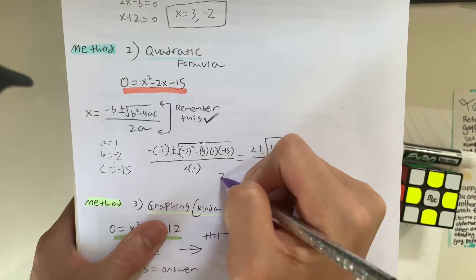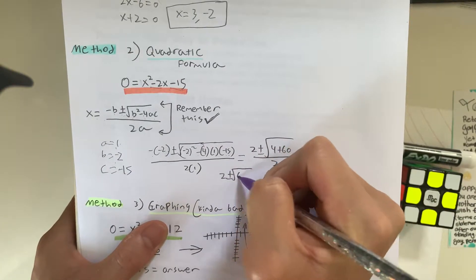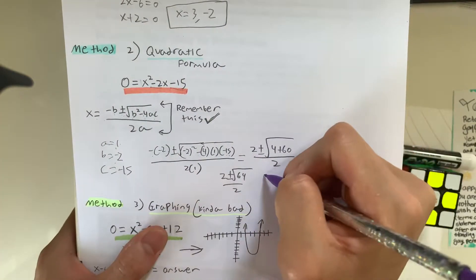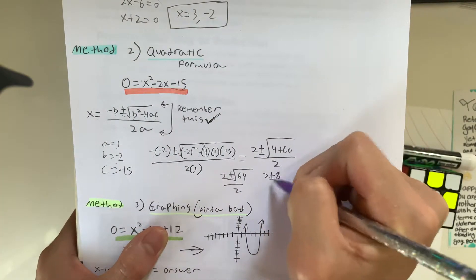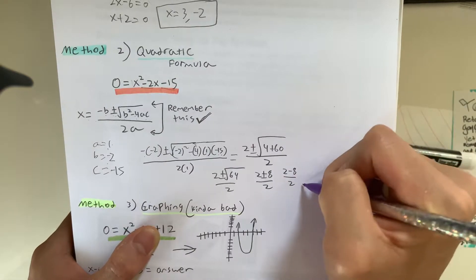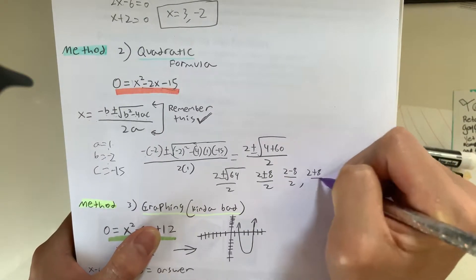That can be simplified to 2 plus minus square root of 64 over 2. And, as you guys know, square root of 64 is 8, so that's equal to 2 plus minus 8 over 2, which is 2 minus 8 over 2, and 2 plus 8 over 2.